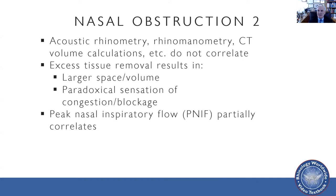If you think about it, that makes some sense. These volume and area measurements are basically measuring size. You can make those measurements look better by simply taking tissue out. But if you remove all the tissue from inside the nose, patients actually get a paradoxical sensation of blockage or congestion — the empty nose phenomenon. So more isn't necessarily better, and simply measuring the anatomy doesn't tell you everything you need to know. It turns out that peak nasal inspiratory flow, assessed with a flow meter, does partially correlate with what patients subjectively feel in terms of their nasal obstruction. So if you're going to use an objective measure, peak nasal inspiratory flow is the way to go.